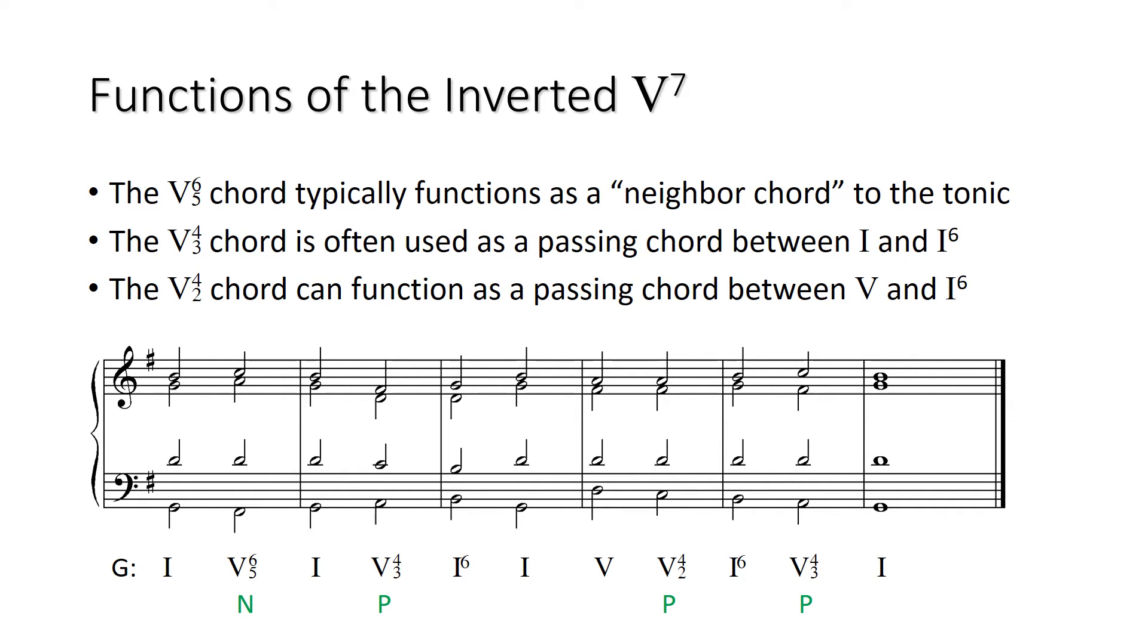Then the final function is V4/2. This is often used as a passing chord that goes down from V to I6. So between V and I6. You can see that in the fourth measure. That's typically how you'll see it.